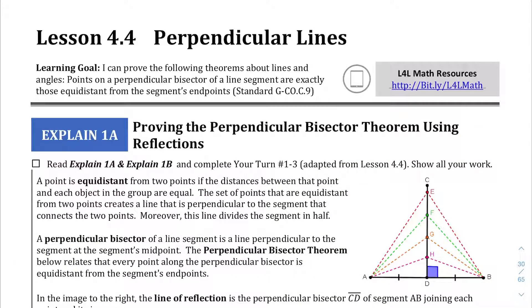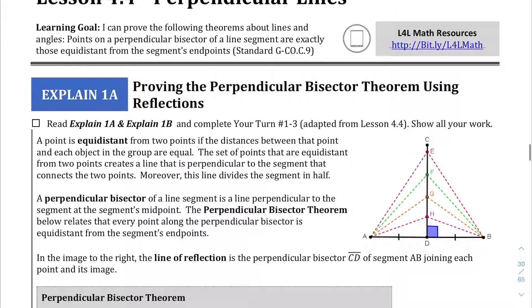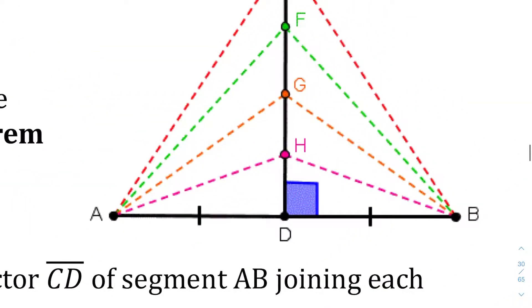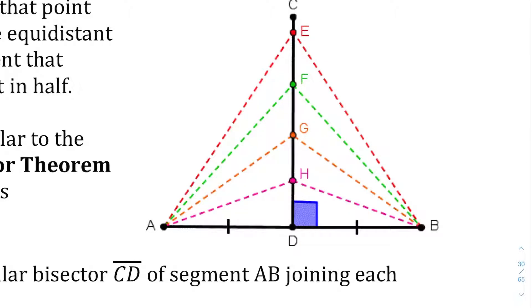We are on lesson 4.4, covering perpendicular lines. In particular, the new concept is the perpendicular bisector. That's just a fancy word that says when a line cuts another line, it cuts it exactly in half and is perpendicular. Perpendicular means the line creates a 90 degree angle with the other line. Not only that, it cuts it exactly in half. If we have line AB, from point A to point D, this distance is the same as from D to point B. The perpendicular bisector in this case is line CD.